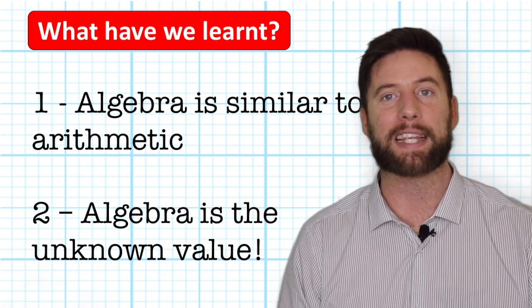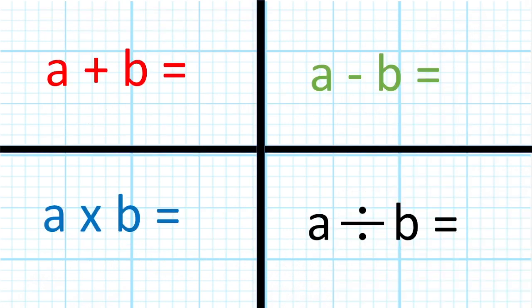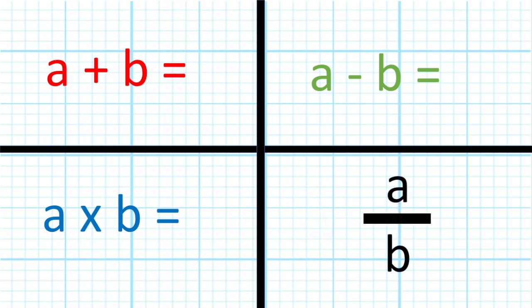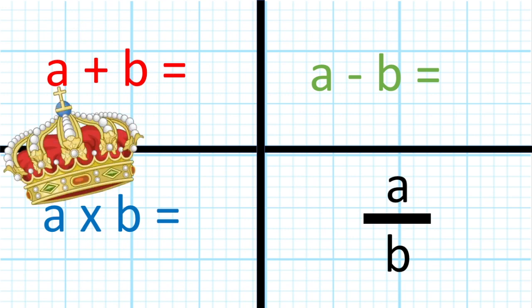Here are the four basic arithmetic operations: addition, subtraction, multiplication, and division. Although in algebra, you will see division being represented in its fraction form. In arithmetic, all four of these operations have the same status. They are the same importance. However, in algebra, we have a king. Multiplication is the king. It gets some special treatment.